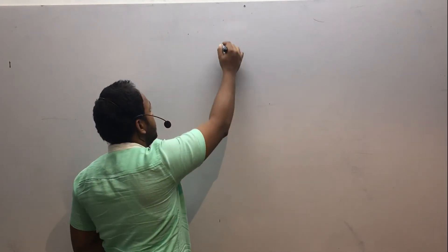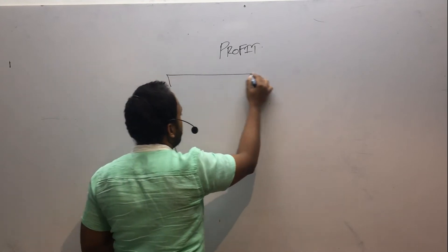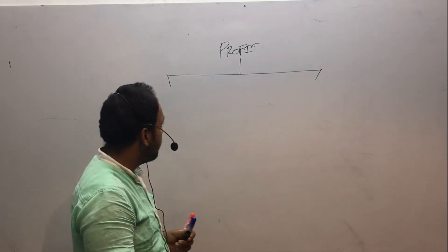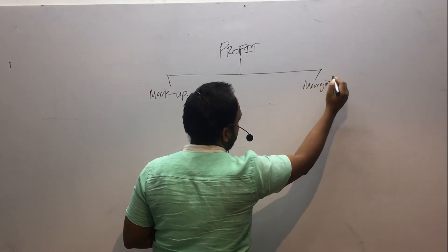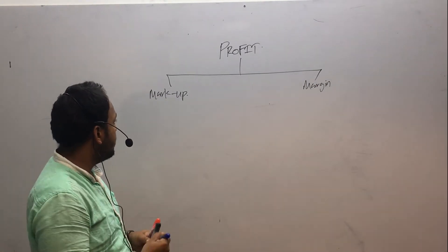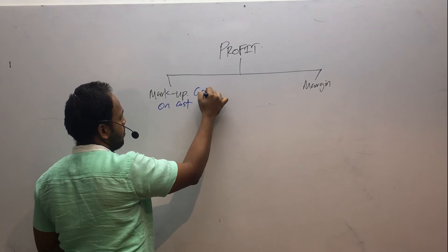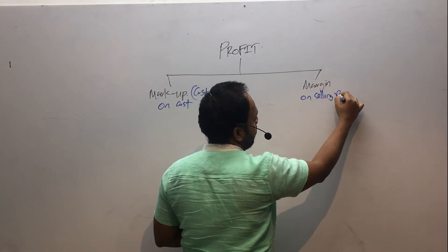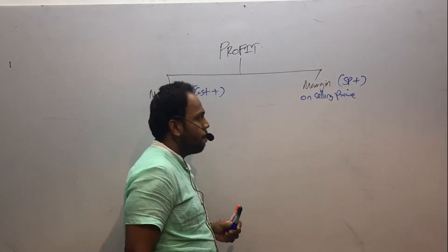We are going to discuss a very important concept related to profit. There are two calculation methods: one is profit markup and the other is profit margin. Markup means it is based on its own cost — we call it cost plus. Margin means it is based on its own selling price — selling price plus.